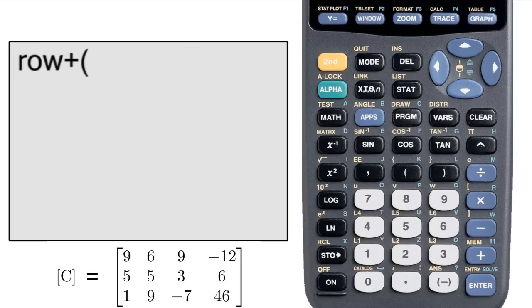Next is row plus. This adds one row to another. Go to the menu and select row plus. Then select the matrix you want to use. In this case, the same one as before. Hit comma. Enter the row that you don't want replaced first, then comma, then the row that you do want to replace, and hit enter.